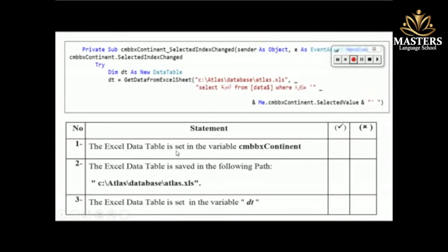Option A says: 'Excel data table is set in the variable ComboBox Continental' — that is wrong, because we are storing in the variable DT, not the ComboBox. Another option says the Excel sheet table is saved to 'see atlas database' — also wrong. The actual purpose of the code is that the Excel data table is stored in the variable named DT, so DT is what holds our data that we will use.